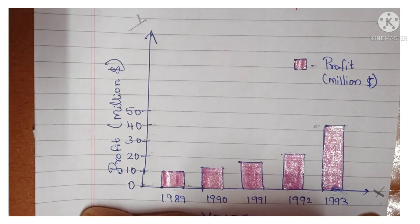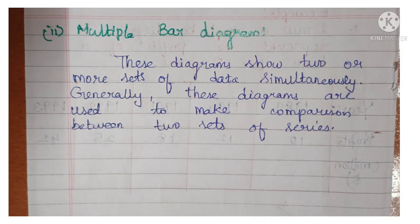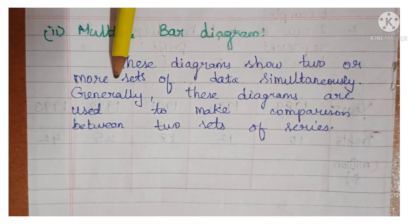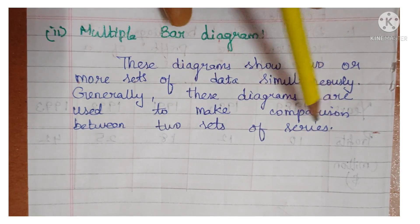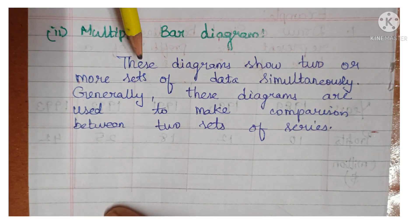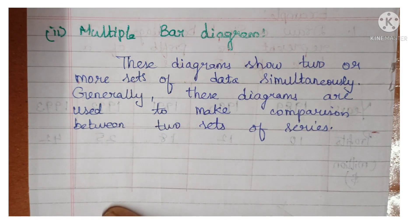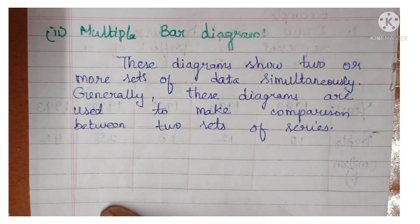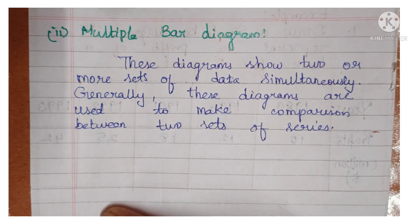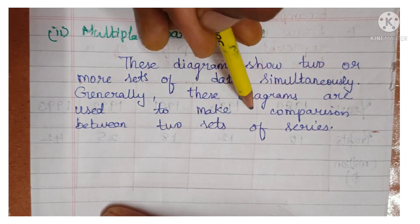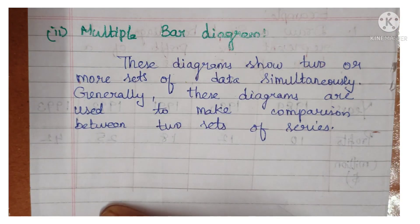Next is the multiple bar diagram. These bar diagrams show two or more sets of data simultaneously — at the same time. Generally, these diagrams are used to make comparisons between two sets of series. For example, in your school, in different sections A, B, C, D, E of 5th class students — how many boys and how many girls — can be represented in the same diagram.